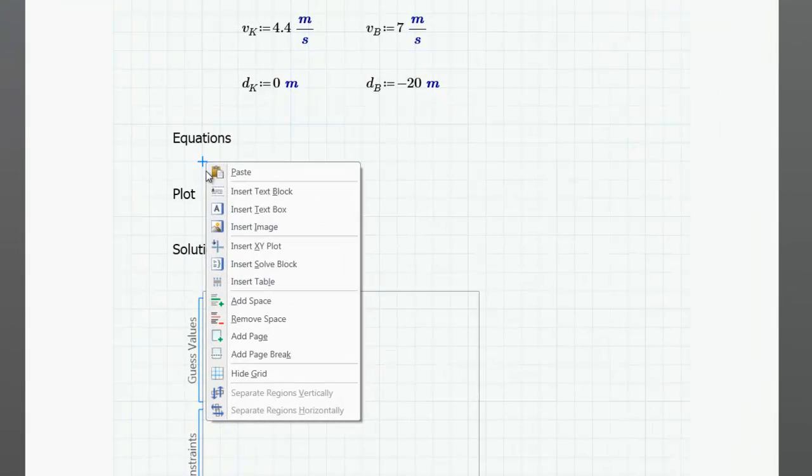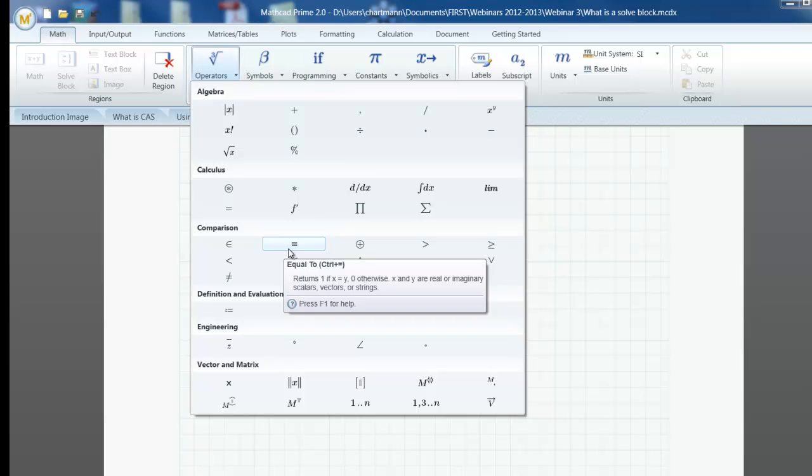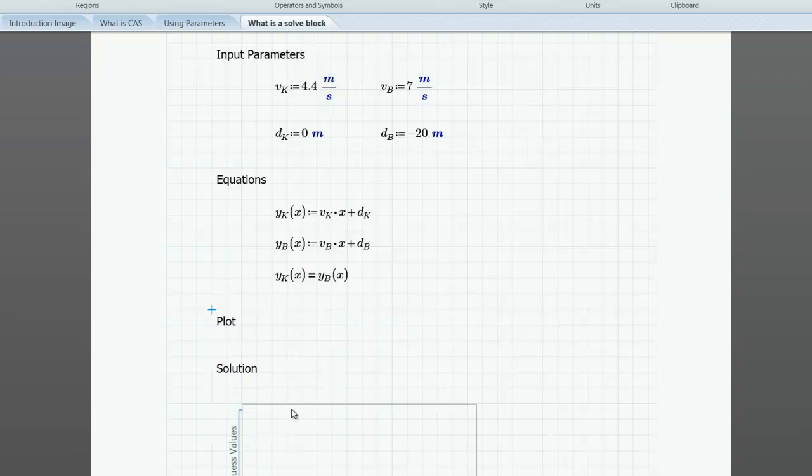And now I have my equations. So I'll add a page to give myself some space. My equations are going to describe the position as a function of time. And Kelsey's position, Y sub K, as a function of x, is going to be V sub K times x plus D sub K. And Bethany's position, Y sub B, as a function of x, is going to be defined as V sub B times x plus her distance at the start of the problem. And what we want to know is when does Y sub K of x, when is that the same? So I'm going to use equal to. When is that the same as Y sub B of x? Now I can remove my space and bring that up.